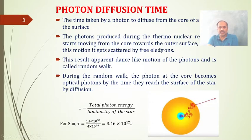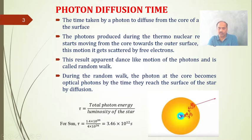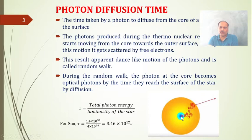Photon diffusion time is the time taken by a photon to diffuse from the core of a star to the surface. These photons are released at the core during the thermonuclear fusion reaction, where hydrogen fuses to form helium. The photon released at the core collides with atoms and molecules, undergoes random-like motion, and finally reaches the surface. The time taken for this process is called the photon diffusion time.